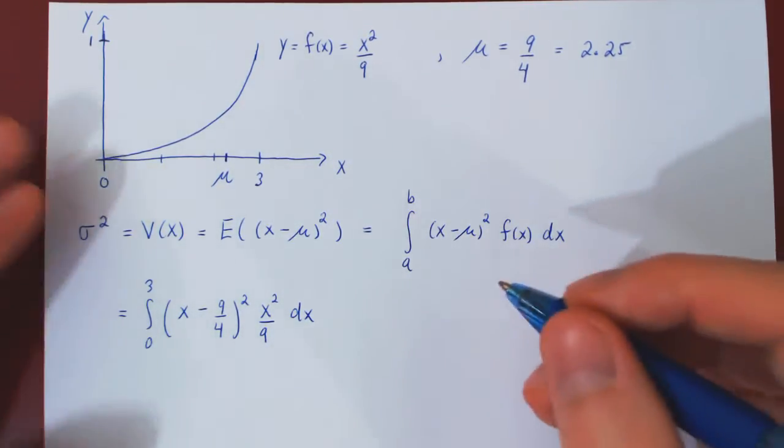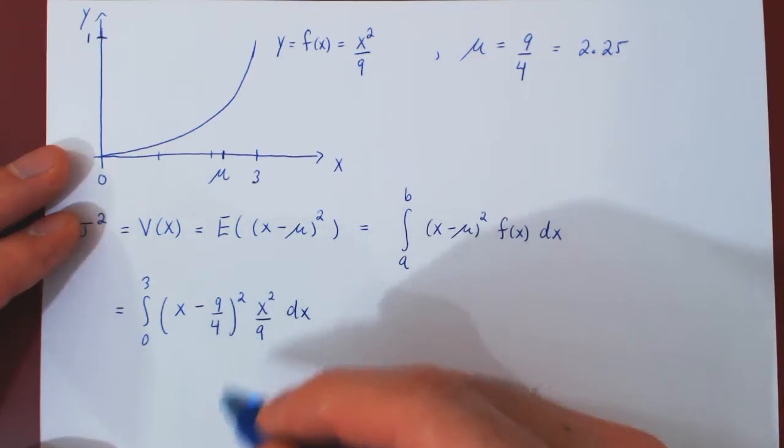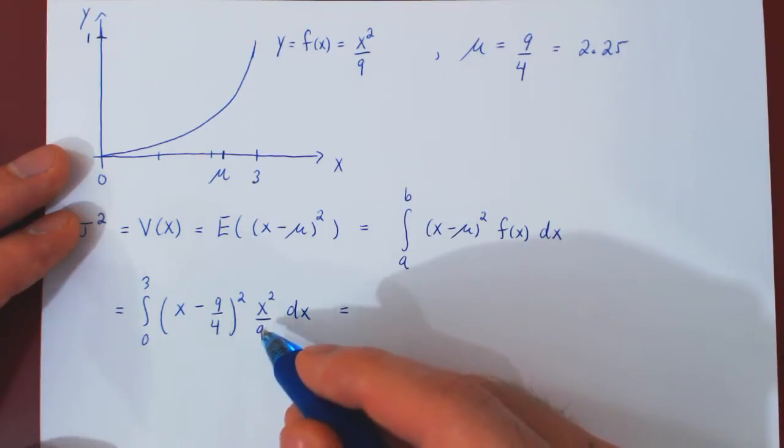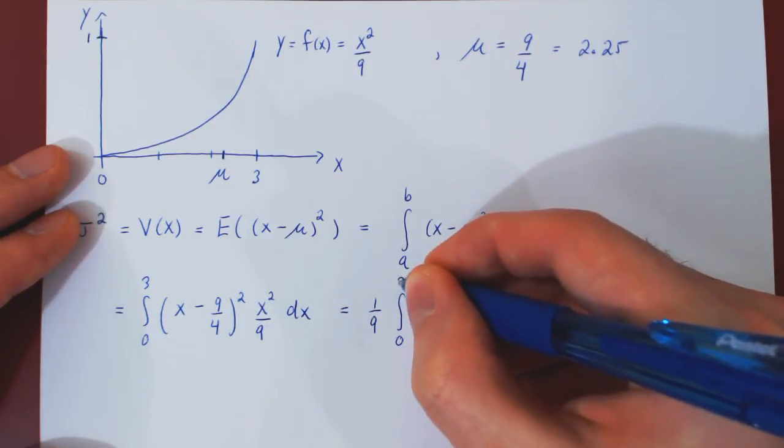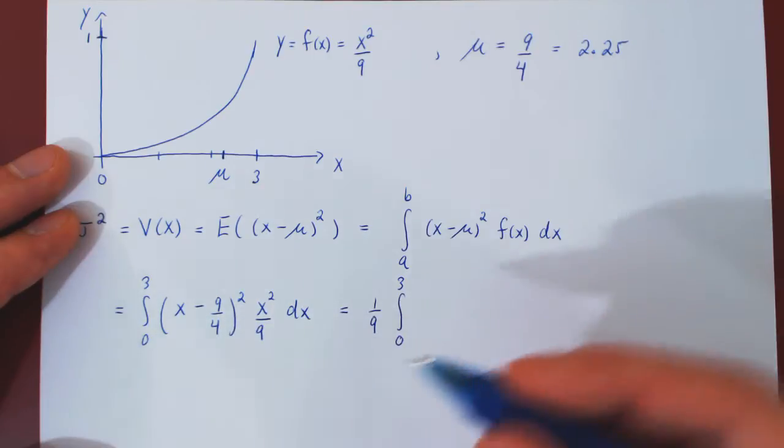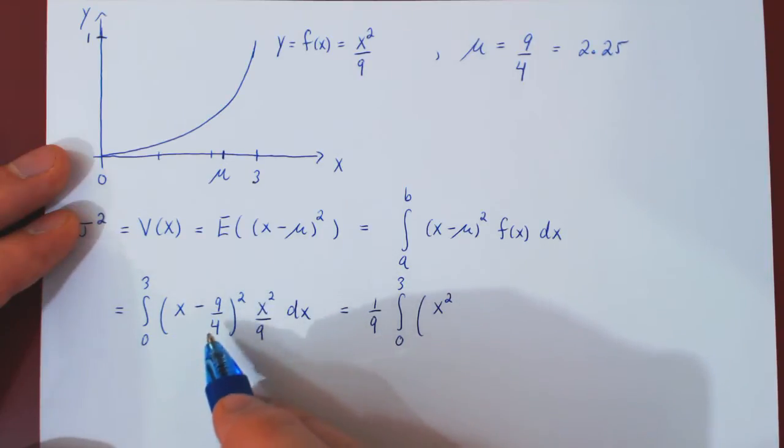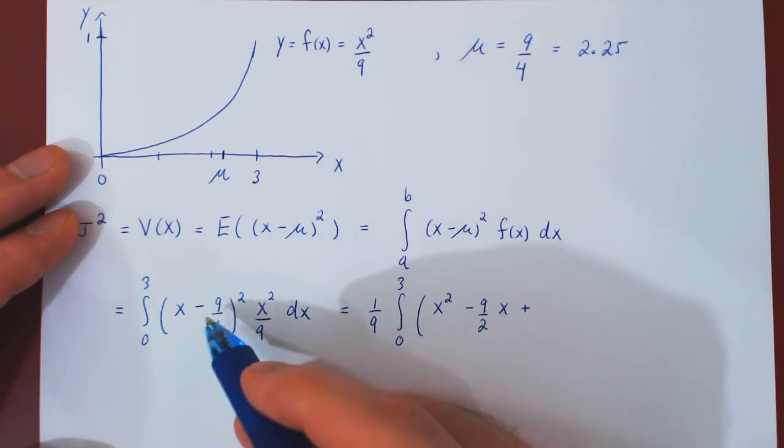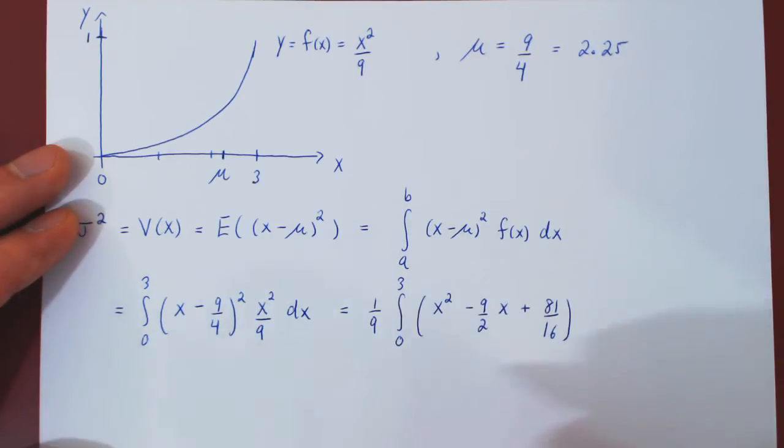And now we have a very simple integral. To work around this product of two functions of x, we simply have to expand and then multiply by x squared. Two things: we'll pull out a 1 over 9 as a constant multiple outside of the integral. And if we square x minus 9 over 4, we will get x squared, minus 9 over 2 times x, plus 9 over 4 squared, 81 over 16, times the left over x squared.